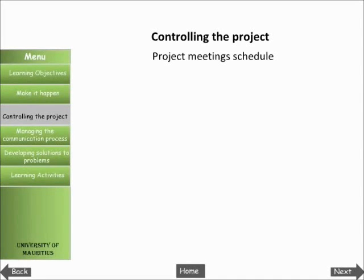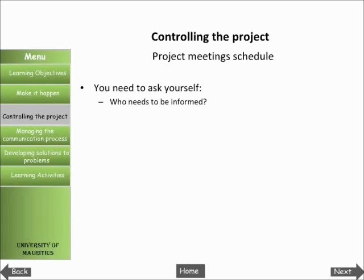Early on, what meetings are essential to the monitoring process? All your stakeholders will expect to receive reports at regular intervals, whether formally or informally. So you need to ask yourself: who needs to be informed, about what, how often, and by what means? Effective communication involves giving information, collecting information, and listening to people.